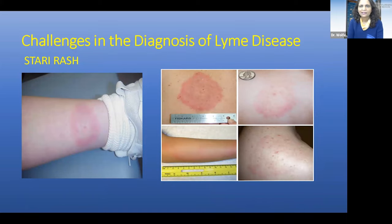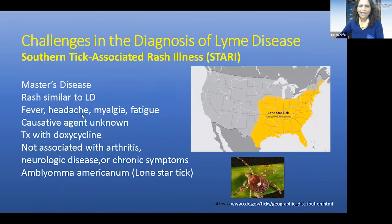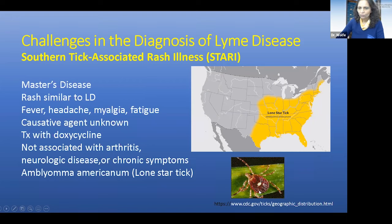This rash is related to another tick-borne illness called STARI, or Southern Tick Associated Rash Illness, and it can have a central clearing just like Lyme disease. Patients may report a tick bite and then have a Lyme-appearing rash. The bacteria or agent that causes it is unknown. Typically patients just get early symptoms — rash, fever, myalgias, fatigue — but they don't go on to have arthritis, neurologic disease, or chronic symptoms. It's associated with the Lone Star Tick, which is bigger than the Ixodes scapularis tick and has a distinctive white dot on its back.